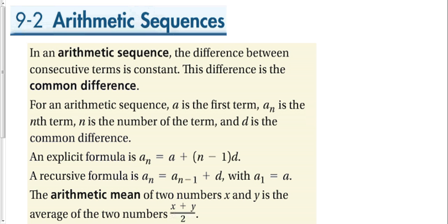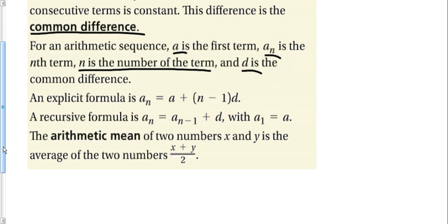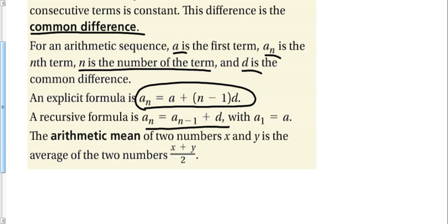In section 9-2, we talked about an arithmetic sequence. In an arithmetic sequence, the difference between consecutive terms is constant. This difference is called the common difference. We are always adding a positive or negative number to get the next term — it's always the same thing. Our definitions: a is the first term, a sub n is the nth term, n is the number of the term, and d is the common difference. Our explicit formula is a sub n equals a plus (n minus 1) times d. Our recursive formula says to get the next term, add d to the previous one.